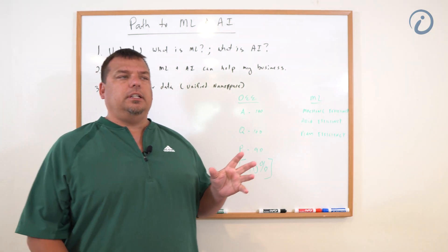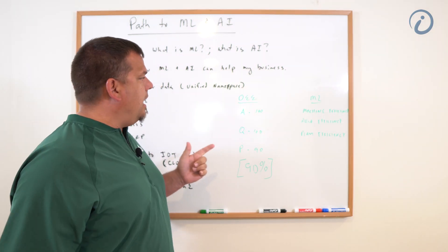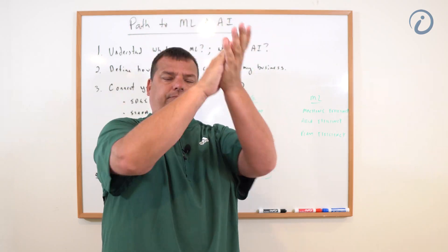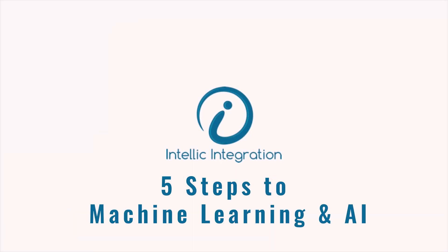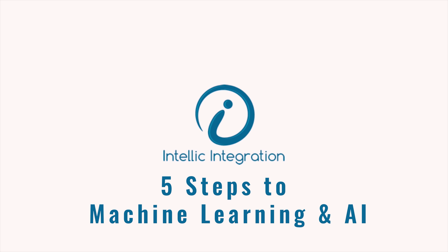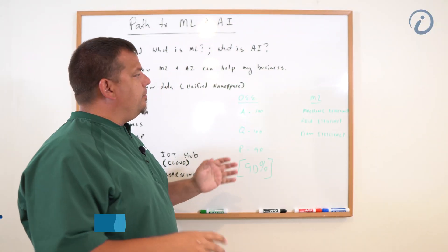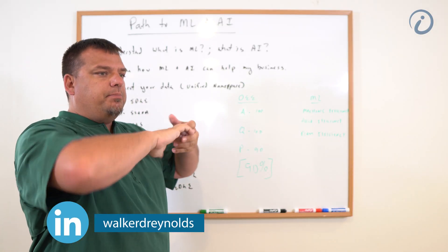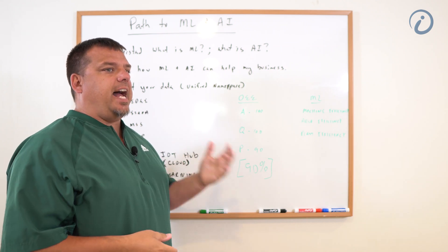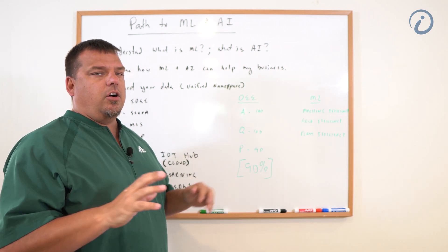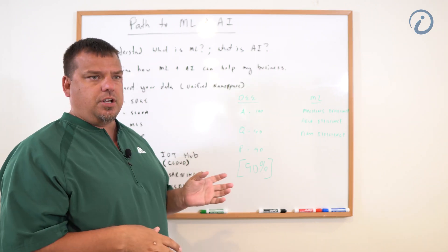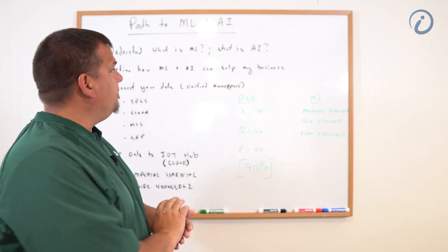The path to machine learning and AI, step-by-step, take zero. What I'm going to do is put into context the value of machine learning and artificial intelligence. This is really more of a value discussion using an illustration.